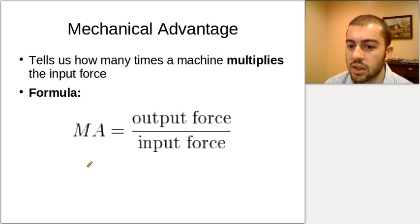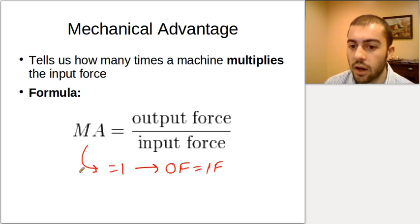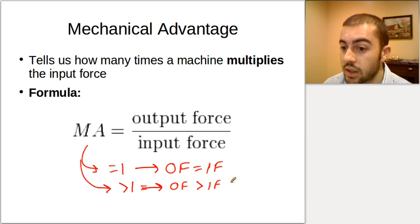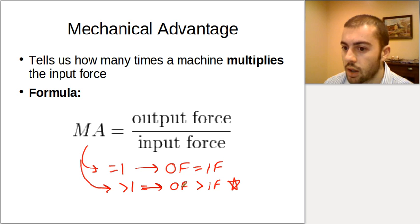So to summarize: if the mechanical advantage equals 1, the output force equals the input force. If the mechanical advantage is greater than 1, that tells us that the output force is greater than the input force — this signals that we're getting more force out of the machine than we put into it.